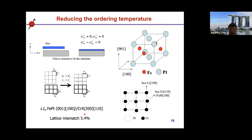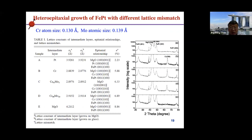To increase the strain, we can dope elements into the chromium underlayer to increase its lattice constant, thereby increasing the lattice mismatch from 5.4% and generating larger tensile strain. We demonstrated this idea using a single crystal MgO substrate and depositing different buffer layers — Pt, Cr, and Cr doped with different contents of Mo — to adjust the lattice constant. We found that Pt lattice constant is close to L10 FePt, while pure Cr has lattice constant 2.8 Å. As we dope more Mo into Cr, the lattice constant increases and the lattice mismatch with FePt becomes larger.